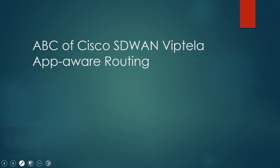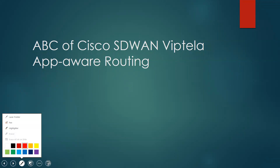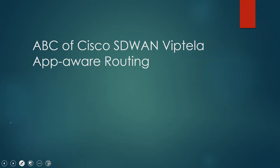Thanks everyone for joining. We are inside day number 18 and today we are going to learn about one of the data policies — the application-aware routing policy. If time permits, we'll also discuss quality of service. This is one of the localized types of policy, so let's focus on application-aware routing policy first, and later I will cover QoS and the rest of the localized policies.